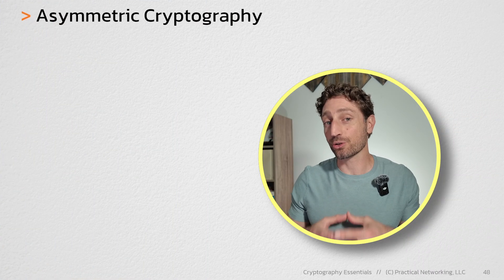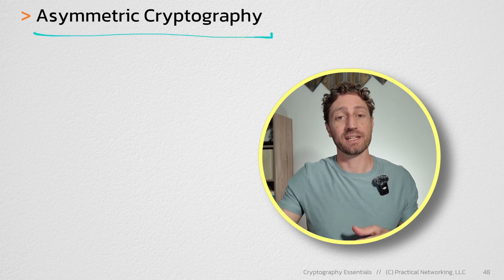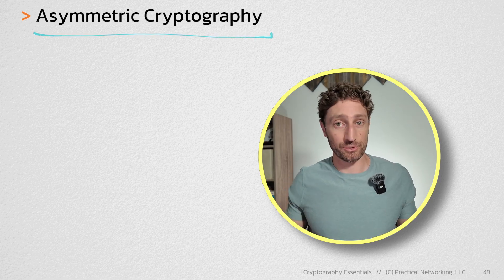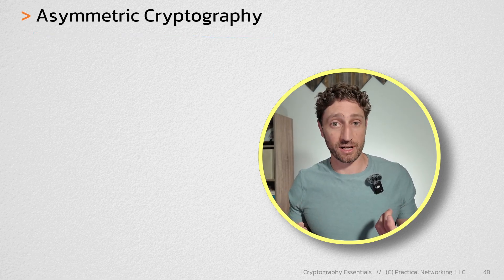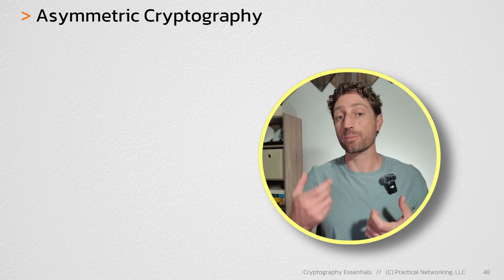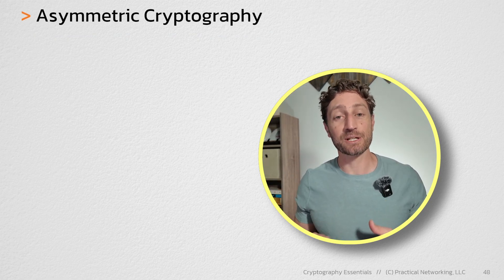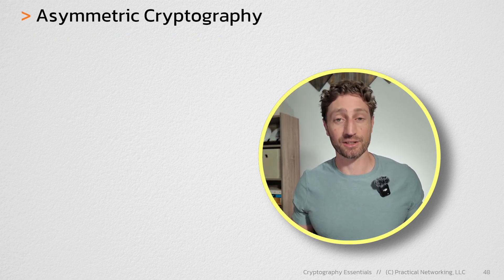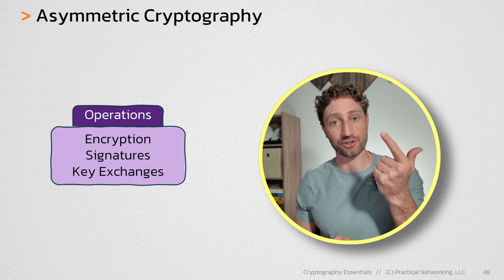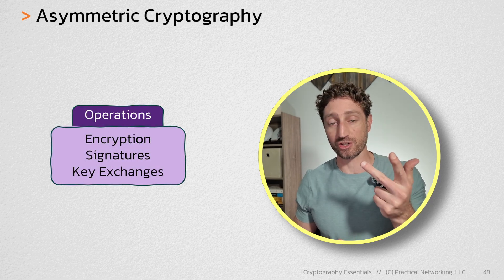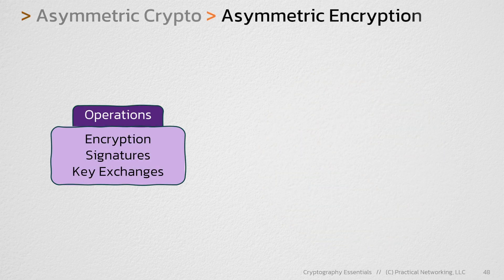As we mentioned earlier in the crypto series, asymmetric cryptography is a group of operations that all require two different values — generally one made public and one made private. Within asymmetric cryptography, there are three possible operations: encryption, signatures, and key exchanges. In this lesson, we're going to be talking about encryption.